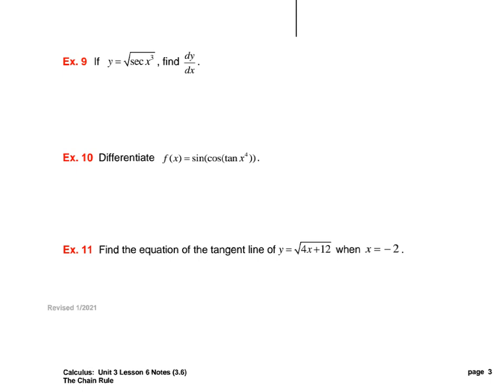Okay gang, let's do just a couple more problems here. These just have more layers to our chain rule. If I look at this, I have the root, and then I have the secant, and then I have the power inside. Even on number 10, we start out with x to the fourth farthest on the inside, then we have a tangent, then a cosine, then a sine. So there are just many, many layers.